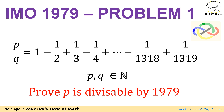In this problem, we have P and Q as natural numbers, and we have P over Q as 1 minus 1 over 2 plus 1 over 3 minus 1 over 4, up to minus 1 over 1318 plus 1 over 1319. We want to prove that P is divisible by 1979.